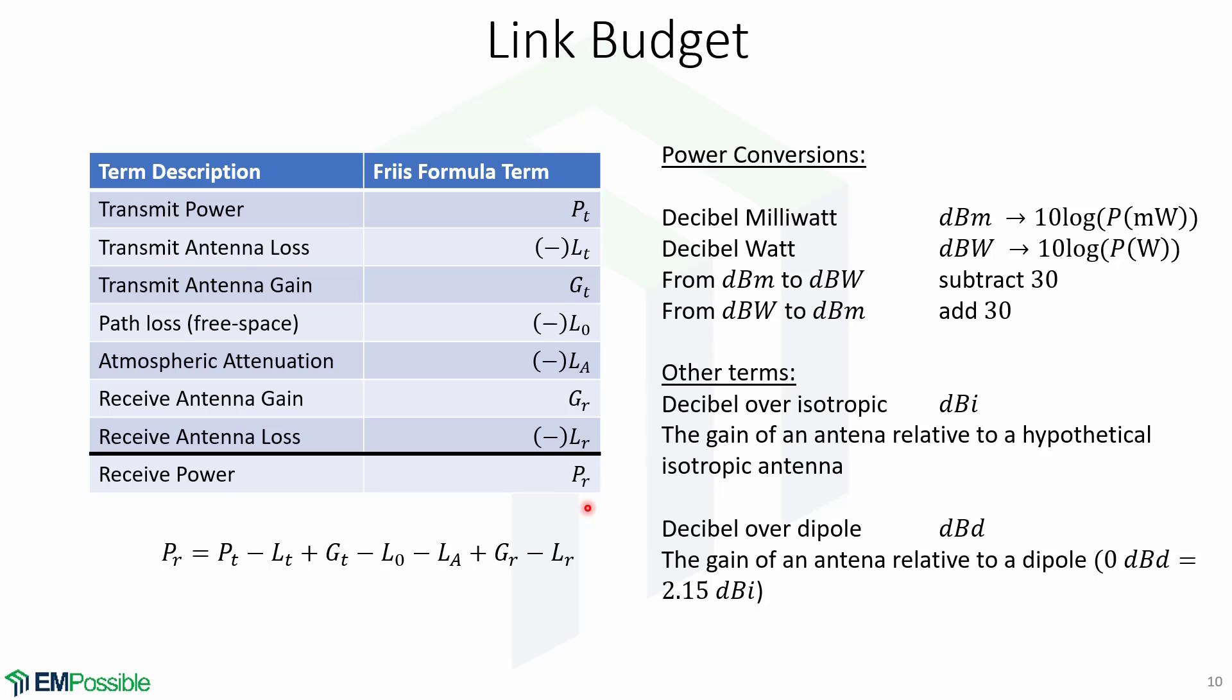In decibel watts, we can write the receive power as a sum of all the different terms. Here is also a list of useful power conversions to decibels, like decibel milliwatt or dBm, decibel watt or dBW, and how to convert from dBm to dBW and vice versa. Other terms that may appear are decibel over isotropic or dBi, which refers to the gain of an antenna relative to a hypothetical isotropic antenna, and also decibel over dipole or dBd, which is the gain of an antenna relative to a dipole, in which 0 dBd equals 2.15 dBi.